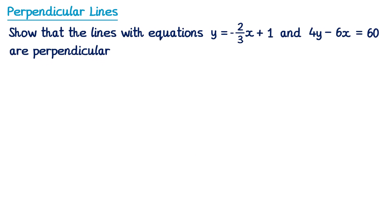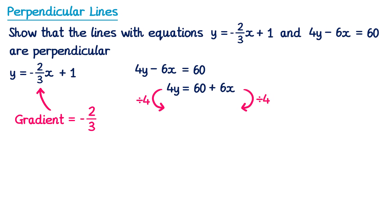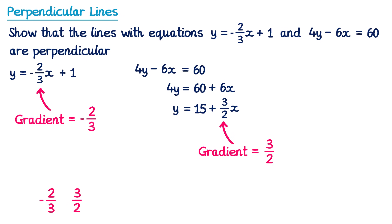Let's try a second example. For the first line, the gradient is negative 2 thirds — we can see it straight away since it's written in the right form. For the other line, which isn't in y equals mx plus c form, we rearrange: start by adding 6x to both sides, giving 4y on the left and 60 plus 6x on the right. Then divide both sides by 4: the left gives y, the right gives 15 plus 6 over 4 x. Simplifying 6 over 4 by dividing both by 2 gives 3 over 2. So the gradient of this line is 3 over 2. Multiplying negative 2 thirds by 3 over 2 gives negative 6 over 6, which is negative 1 — therefore these lines are perpendicular.